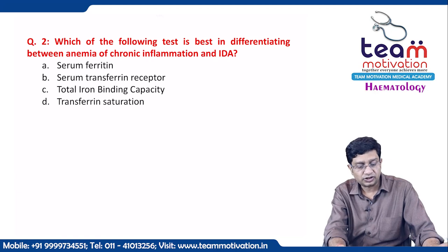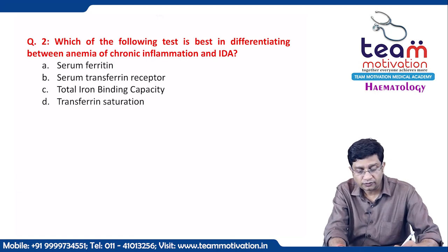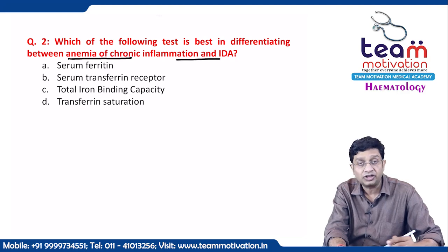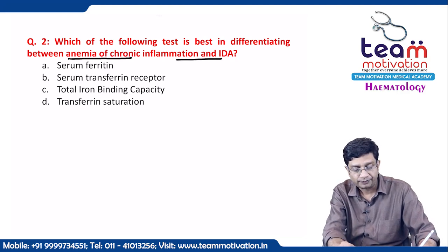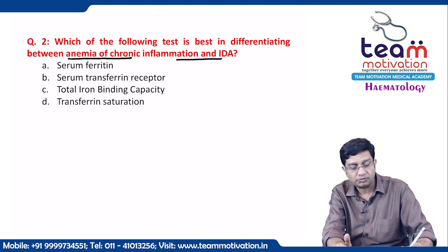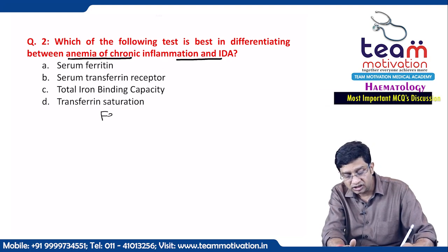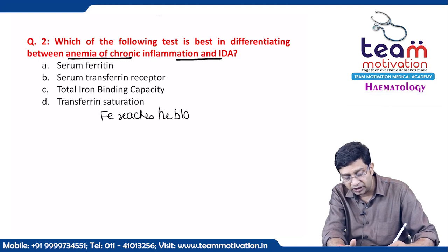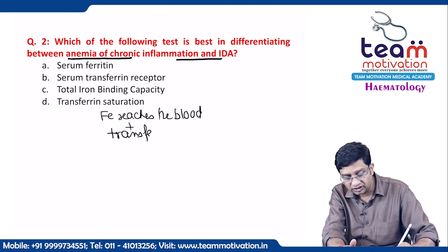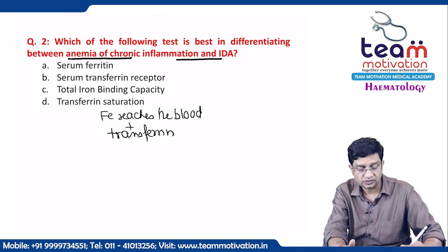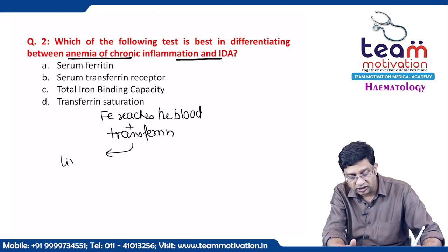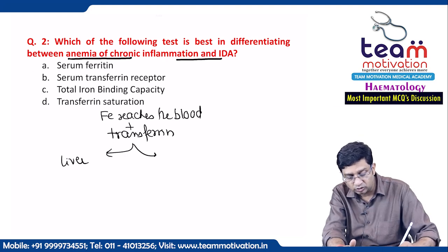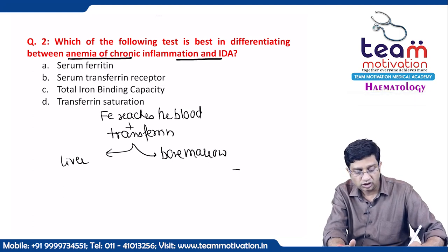Which test best differentiates anemia of chronic inflammation from iron deficiency anemia? Once iron reaches the blood, it combines with transferrin, which then travels to the liver and bone marrow.